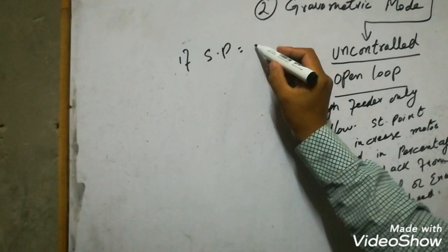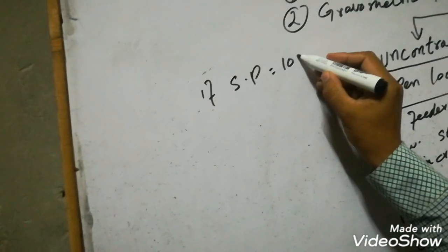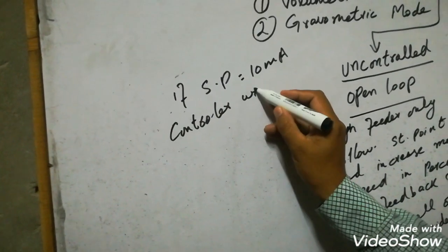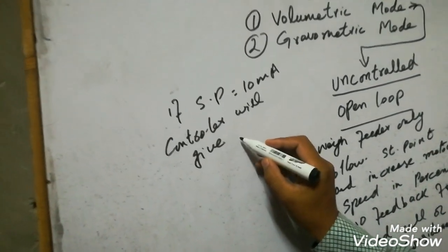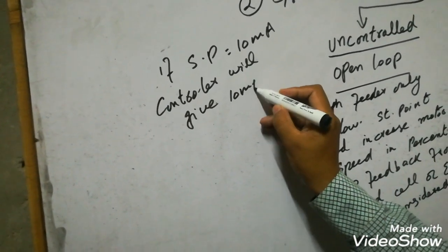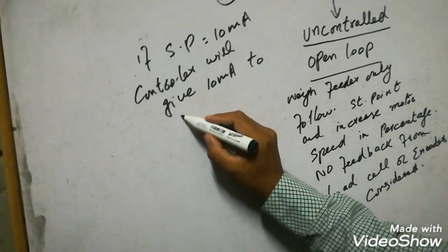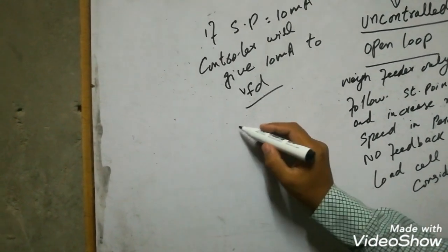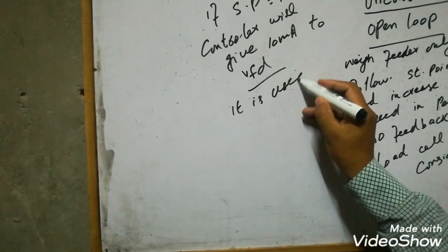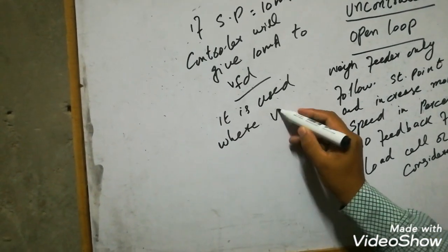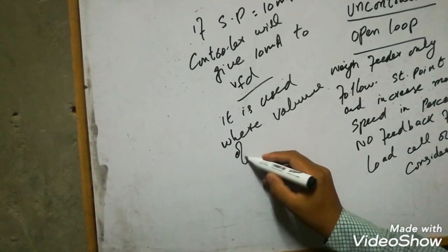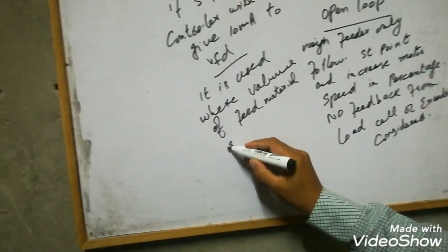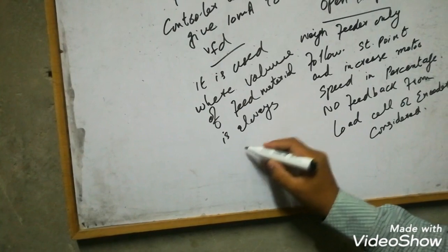So if the set point of the wave feeder in volumetric mode is 10 mA, the controller will give 10 mA to the VFD. This is just an open loop — it gives the percentage of the set point to the VFD and it does not control the material if there is a difference in the quantity of the material.